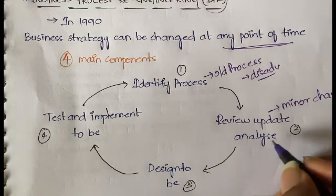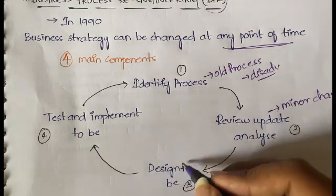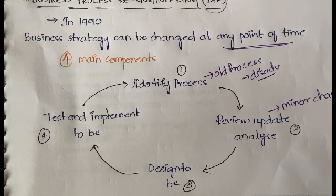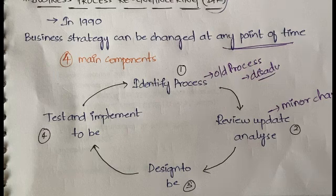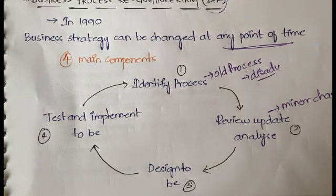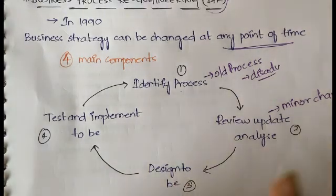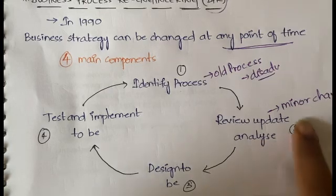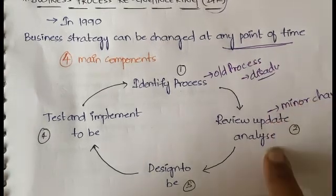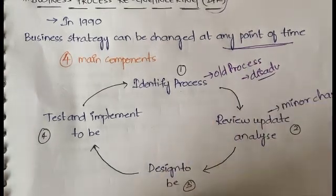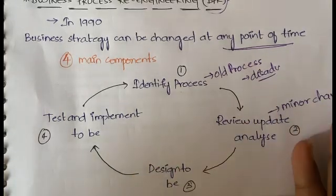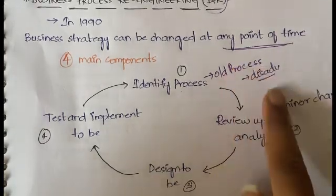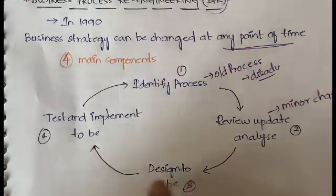Once improvements are confirmed, whatever change has been made is designed — either on paper or as a visual diagram — so it can be clearly understood. This is the design to-be step, where the change from the old process to the new process is laid out in a design format.